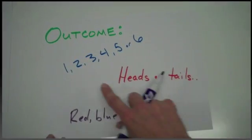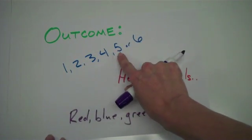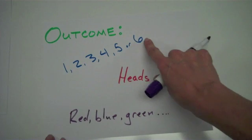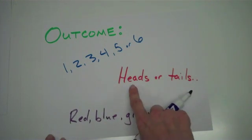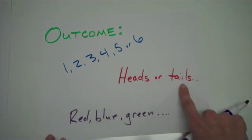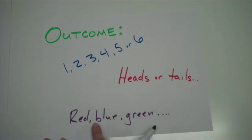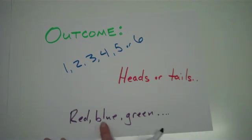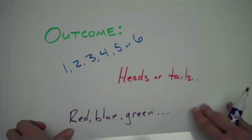When you roll a dice, you can get a one, two, three, four, five, or six. If you flip a coin, you can get either heads or tails. And if you pick marbles out of a bag, in this example, you could get red, blue, or green. So this is basically everything that is possible to happen.